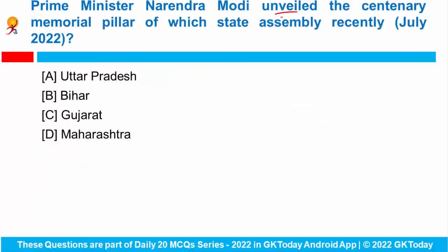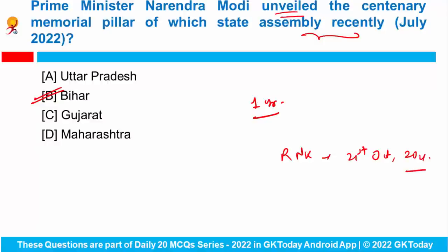Prime Minister Narendra Modi unveiled the centenary memorial pillar of Bihar Assembly to mark the conclusion of one-year centennial celebrations. The foundation stone was laid by President Ramnath Govind on 21st October 2021. The Prime Minister also officially inaugurated the garden near the pillar, named Shatabdi Smriti Udyan.